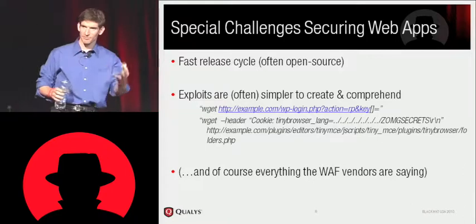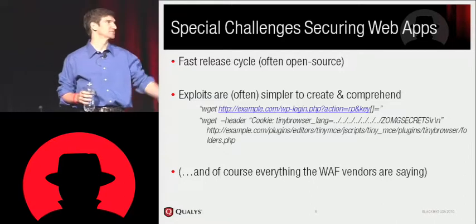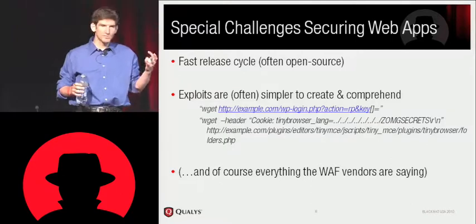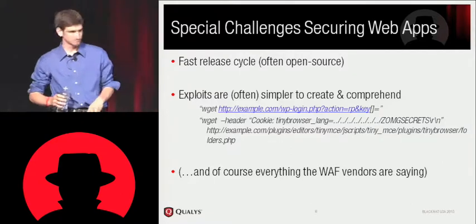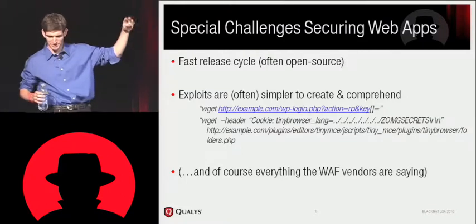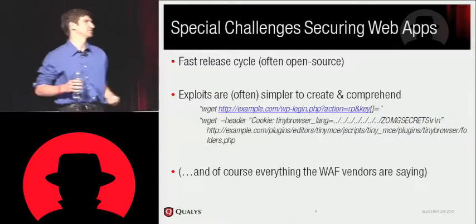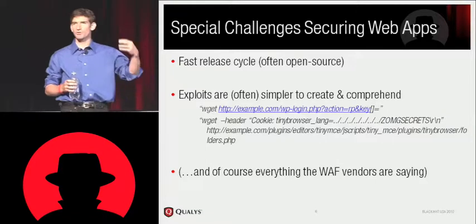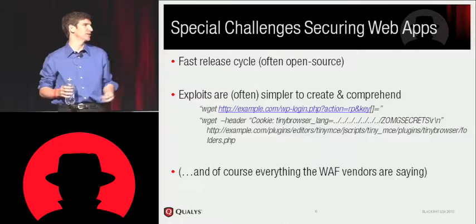Fast release cycle — we talked about that, and for all the reasons that we like developing web apps, they have that other side from the administering, maintenance, and security perspective. Exploits are simpler to comprehend, and therefore simpler to create, propagate, and execute. Here are two examples of actual complete working exploits — known published ones: a WordPress admin password reset and a Joomla file disclosure. They're exploitable via wget. You don't need IDA Pro or any of these deeper tools that take more domain knowledge. So there's a lot going on in web application security.